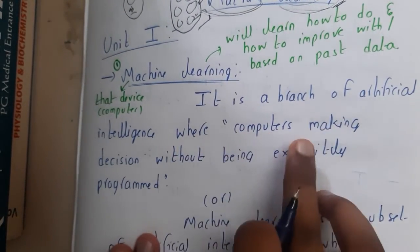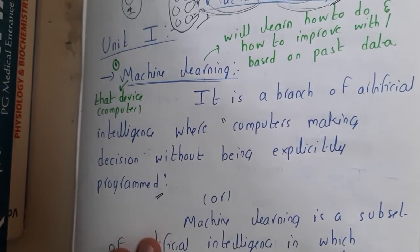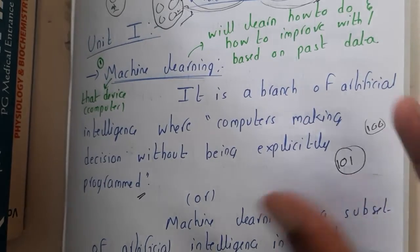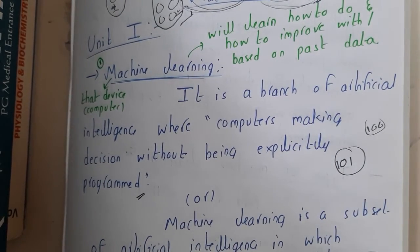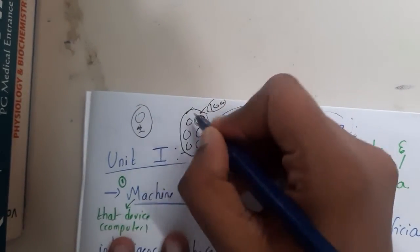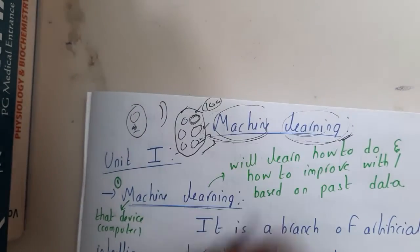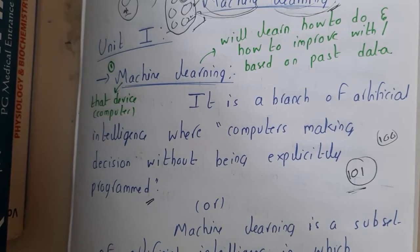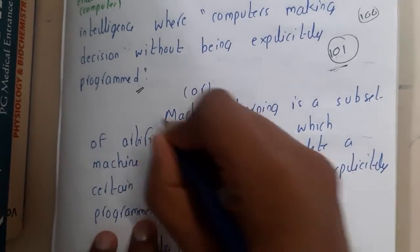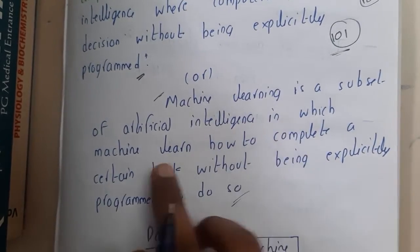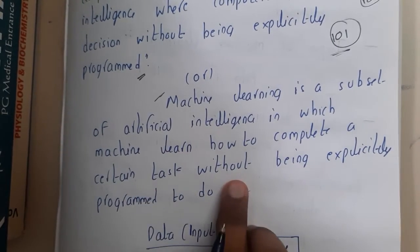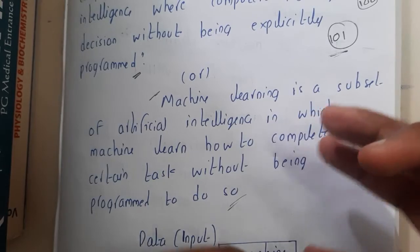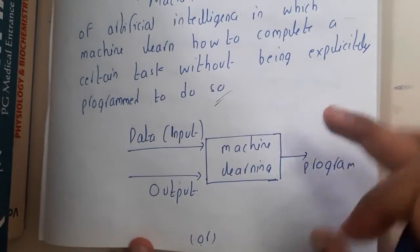Machine learning is a branch of artificial intelligence where a computer makes decisions without being explicitly programmed. Basically, I never told the robot that the 101st item is an orange — I gave 100 inputs, told it those were oranges, and when I gave the 101st orange it recognized it on its own. In reality, other fruits like bananas may also be given, and the machine will recognize them. That concept is machine learning. A more detailed definition: machine learning is a subset of artificial intelligence in which a machine learns how to complete a certain task without being explicitly programmed.